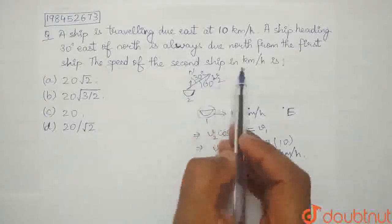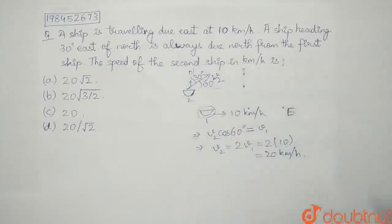So, the speed of the second ship in km per hour is 20. The correct option for this question will be option C. Thank you.